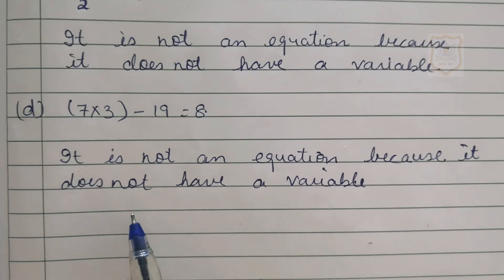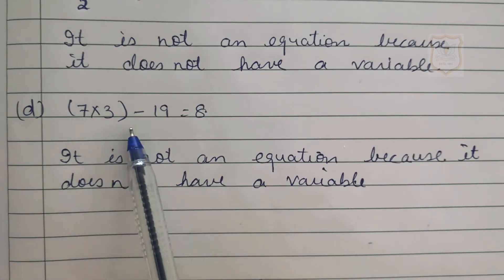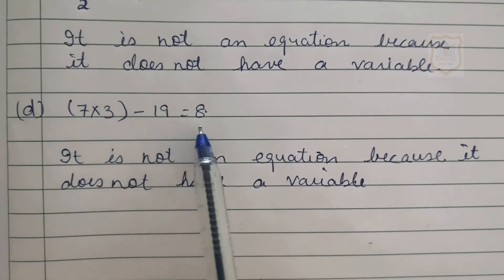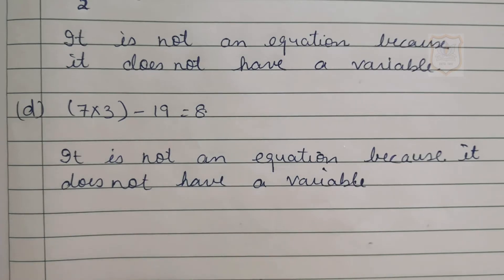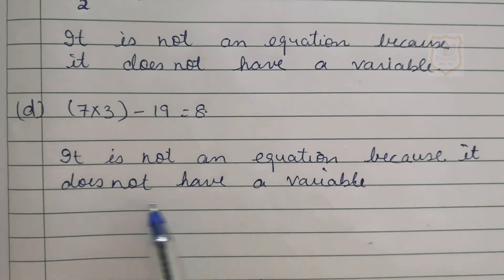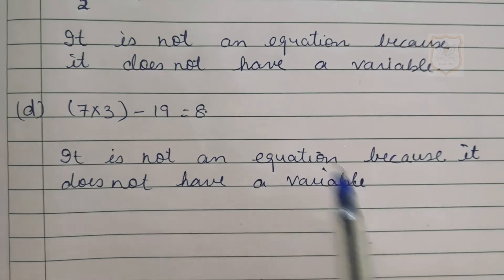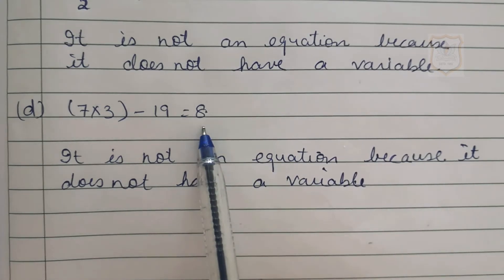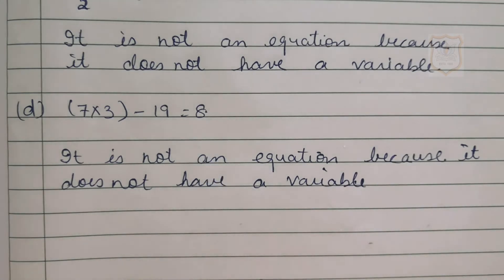Part D of question number 1: 7 multiplied by 3 minus 19 equals 8. We have to state whether this is an equation with a variable or not. It is not an equation because it does not have a variable — this expression doesn't carry a variable. The remaining parts of question number 1 of exercise 11.5 you have to do by yourself.